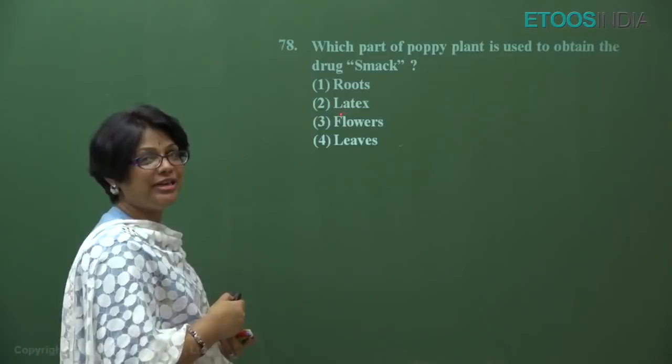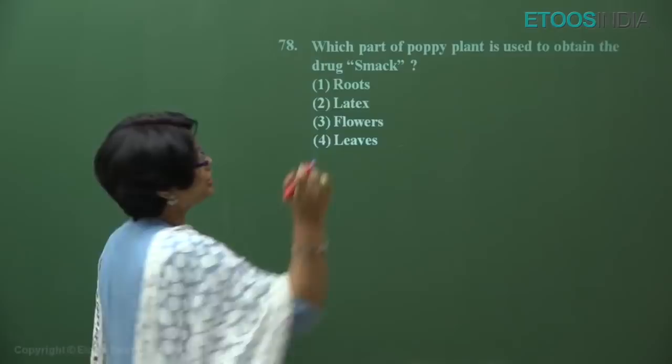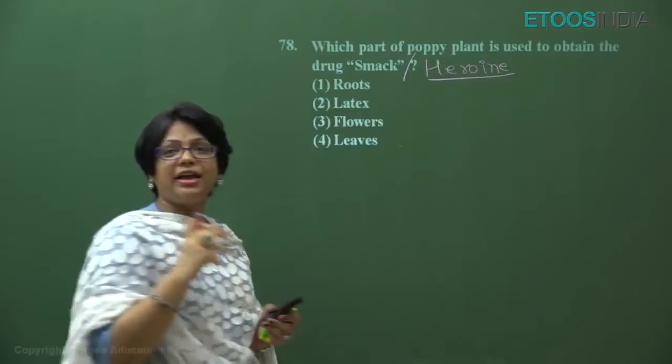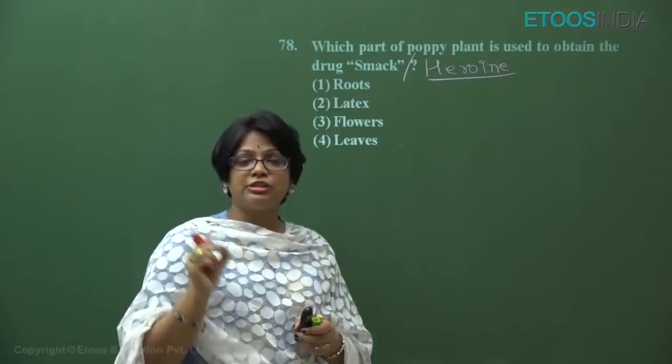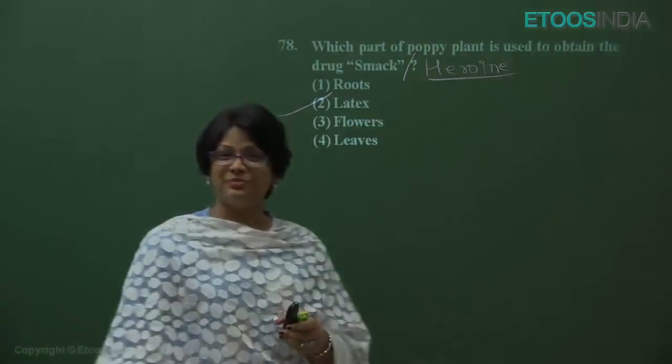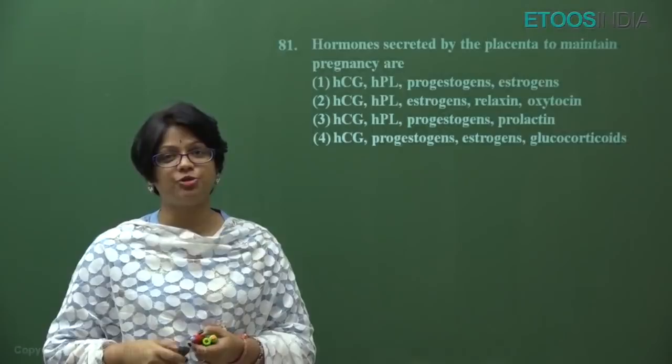Question number 78: which part of the poppy plant is used to obtain the drug smack? Smack, also called heroin or diacetylmorphine, is obtained from Papaver somniferum. Per NCERT, heroin is extracted from the latex of the poppy plant. Answer is option number two.